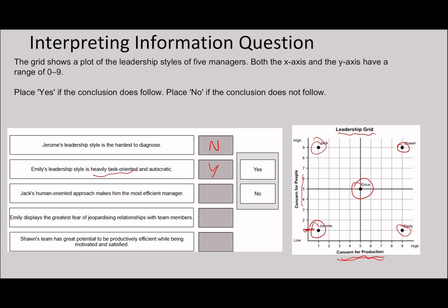Jack's human-oriented approach makes him the most efficient manager. Well, Jack does have a very human-oriented approach, but we don't know anything really about efficiency. If we're trying to say that production is about efficiency or the factor for efficiency, you can see here Jack has very low production. So I'd say this is no either way. First of all, they don't really mention anything about efficiency, but secondly, if it's trying to say that production is linked to efficiency, even then Jack has very low production.